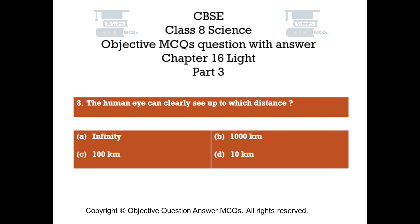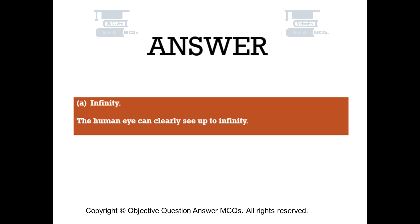Question number 8: The human eye can clearly see up to which distance? Option A: Infinity, Option B: 1000 kilometers, Option C: 100 kilometers, Option D: 10 kilometers. The right answer is Option A: Infinity. The human eye can clearly see up to infinity.